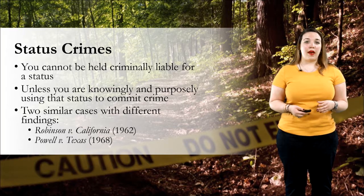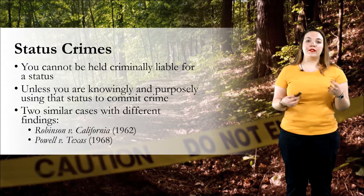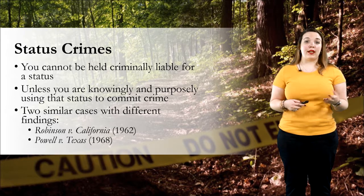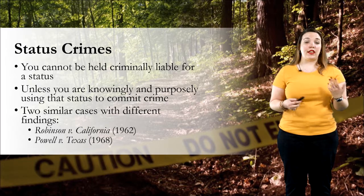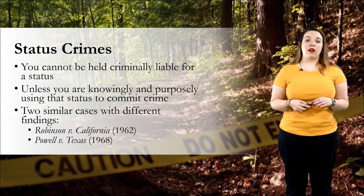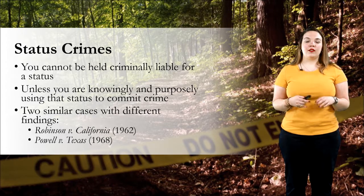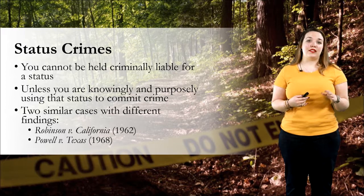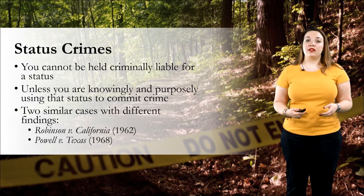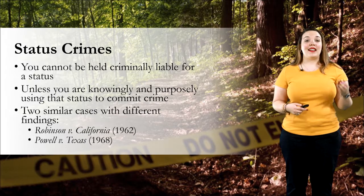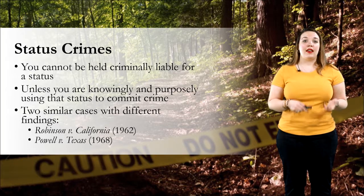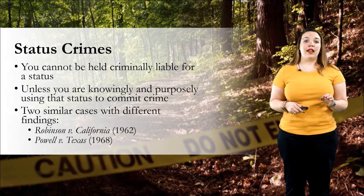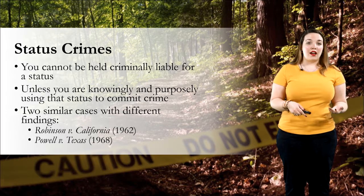In Powell v. Texas, Mr. Powell was a self-described alcoholic who kept getting arrested for public intoxication. He argued that because he was an alcoholic, he should not be found liable for being drunk in public, basing his argument on the Robinson case tried six years earlier. The Supreme Court disagreed, stating he was not being prosecuted for being an alcoholic, but rather for a public safety issue — he was drunk in public and causing a commotion. These are two very similar cases, but the arguments are nuanced in that they straddle the line between status and non-status type crimes.